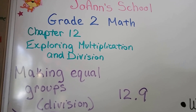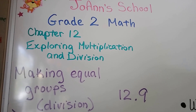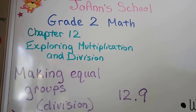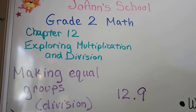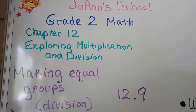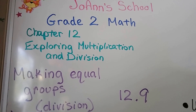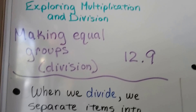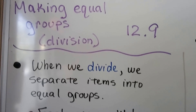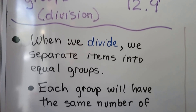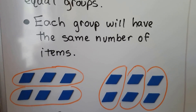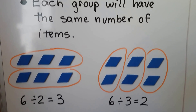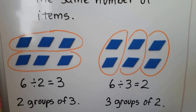We started talking about division in the last video, lesson 12.8. Now we're going to be talking about making equal groups. This is division again, lesson 12.9. When we divide, we separate items into equal groups. That means each group will have the same number of items.